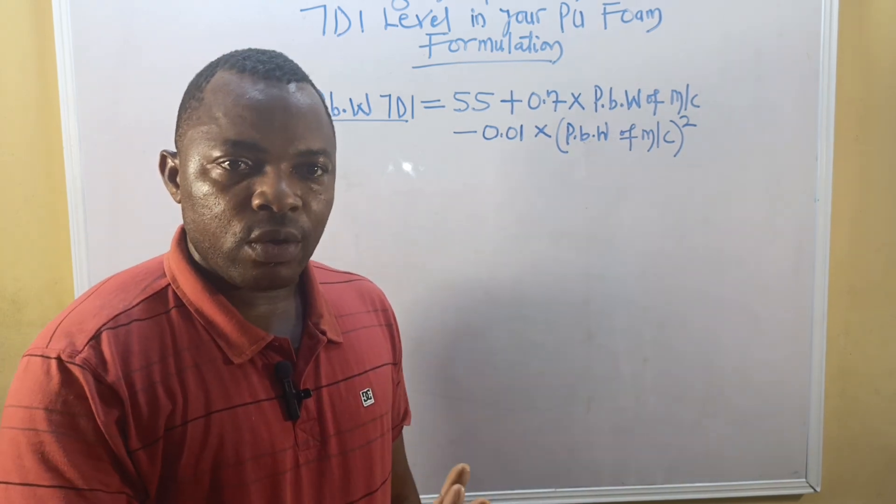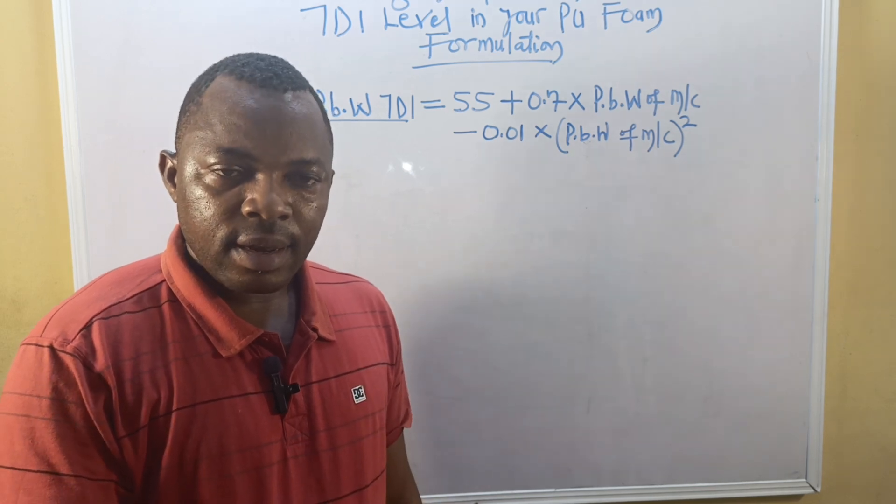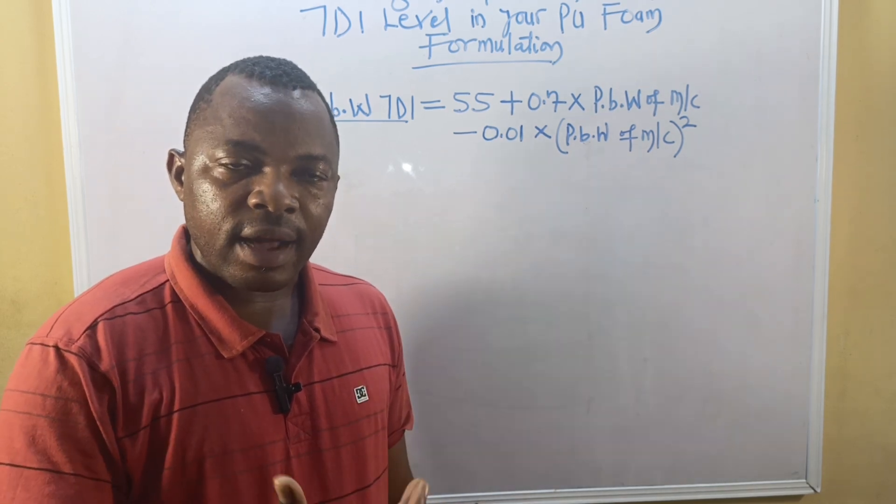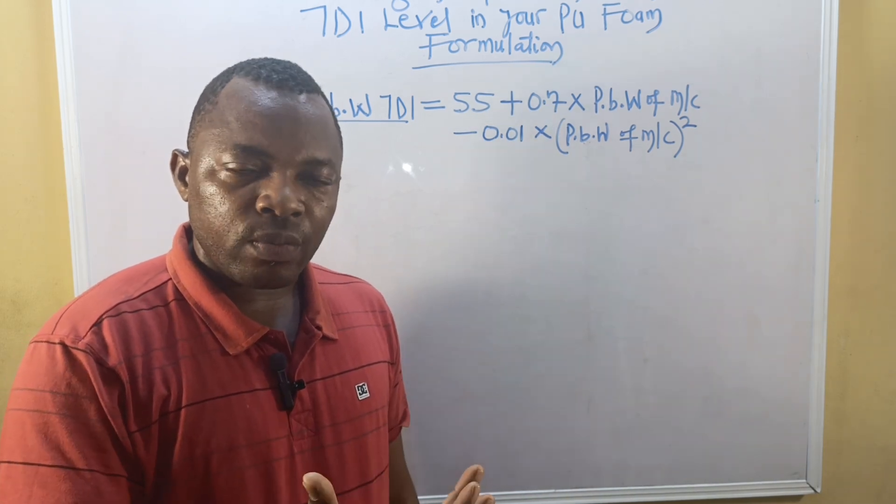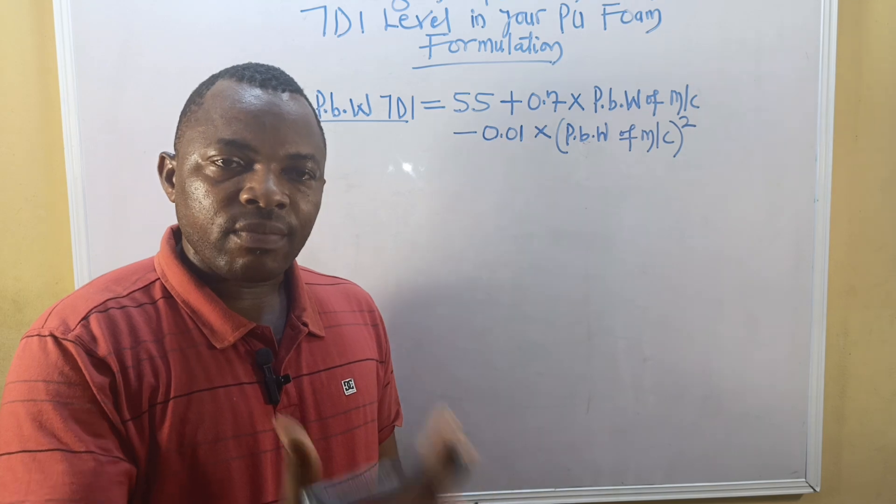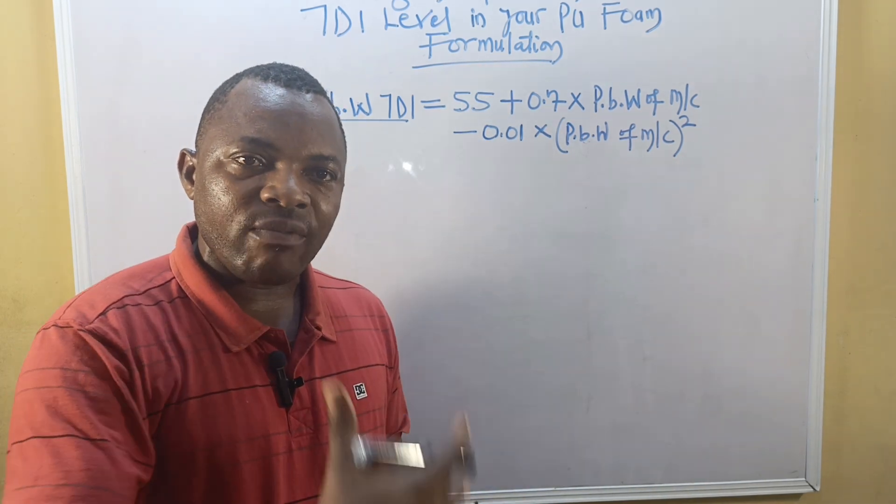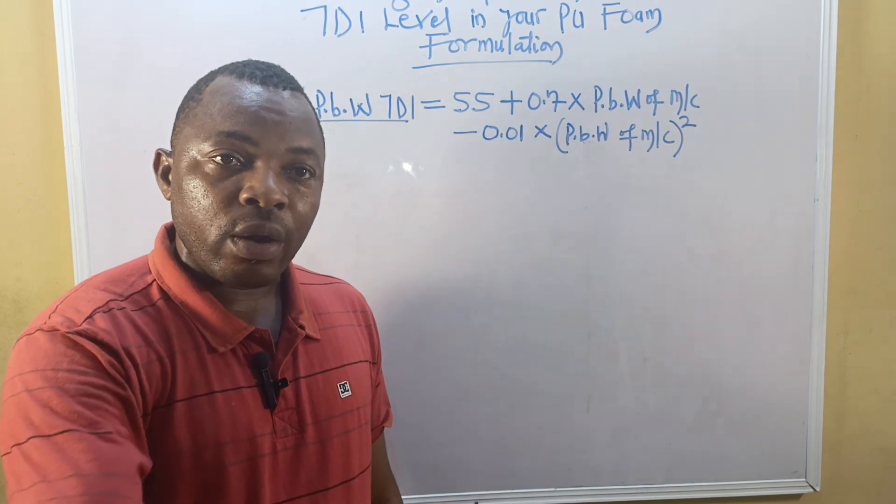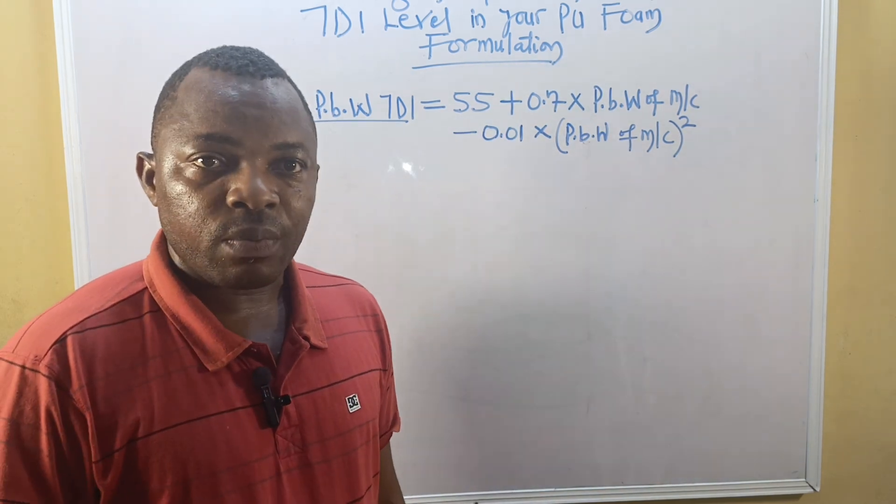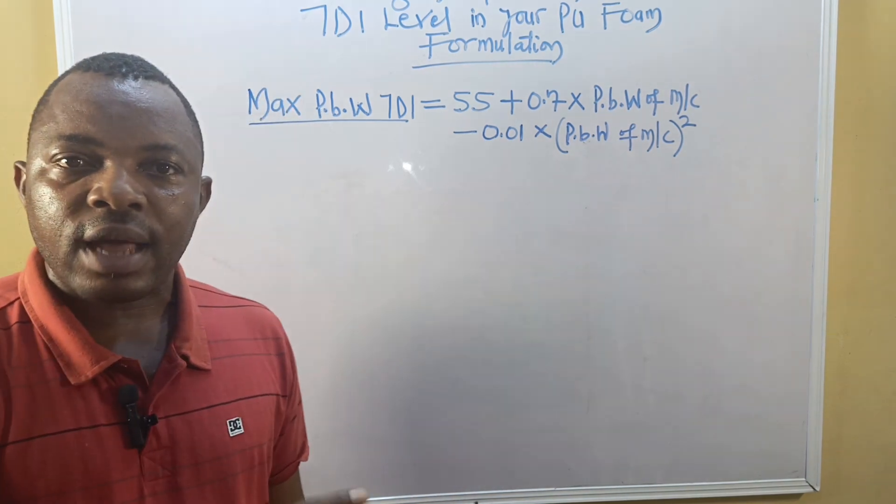After designing the formulation, you have to measure your TDI or index, that is the isocyanate index. This index is the ratio of TDI that is required that will react with the available hydroxyl groups in the polyol.